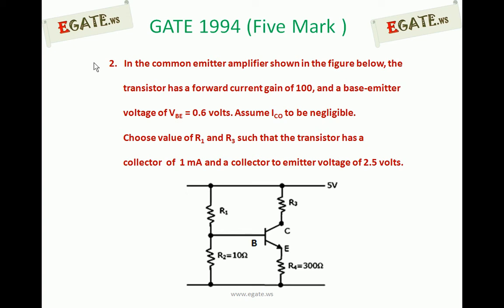Choose the values for R1 and R3 such that the transistor has a collector current of 1 mA and a collector to emitter voltage of 2.5 volts.